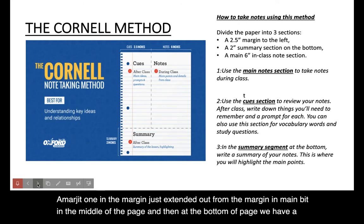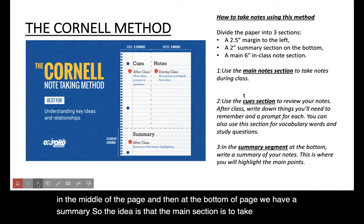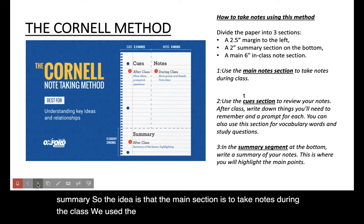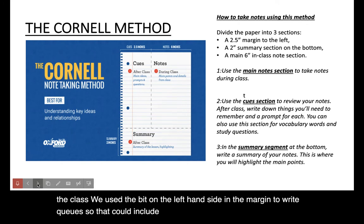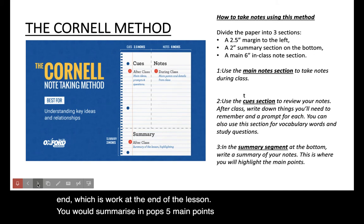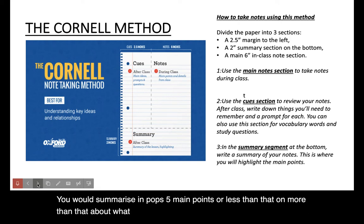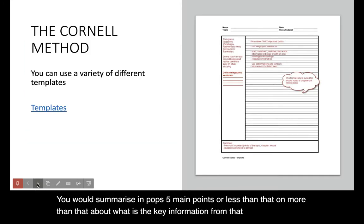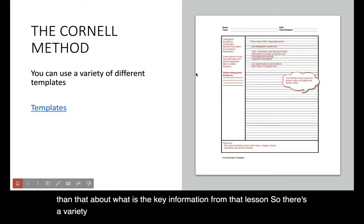The main section is to take notes during the class. We use the bit on the left hand side in the margin to write cues, so that could include key vocabulary, questions that you want to ask from the lesson. And then finally we've got a summary bit at the end which is where at the end of the lesson you would summarize in perhaps five main points or less about what is the key information from that lesson. There's a variety of different templates that you can use and I've attached a link there so that you can have a look at them.